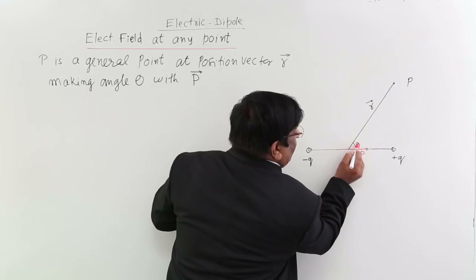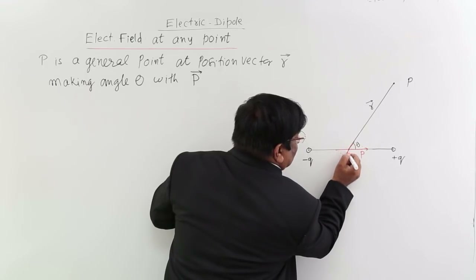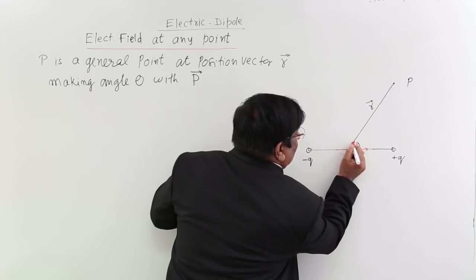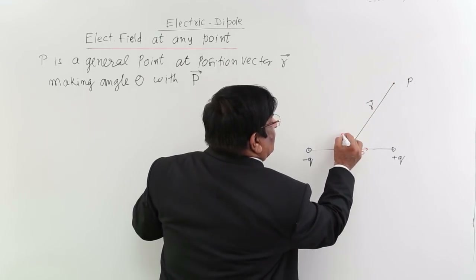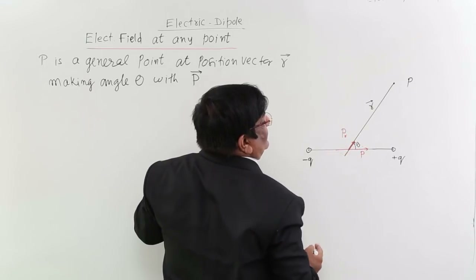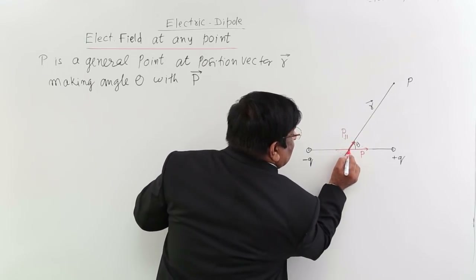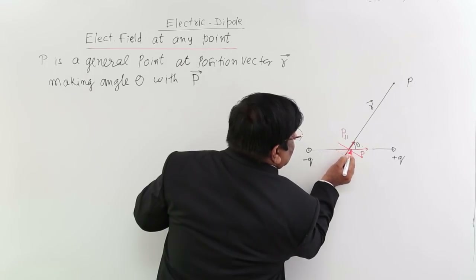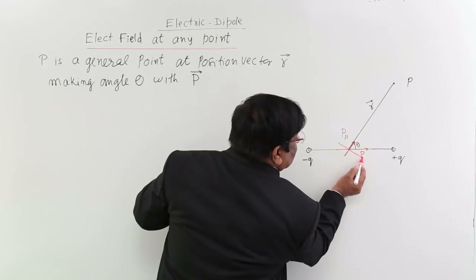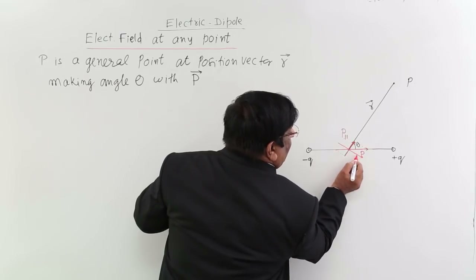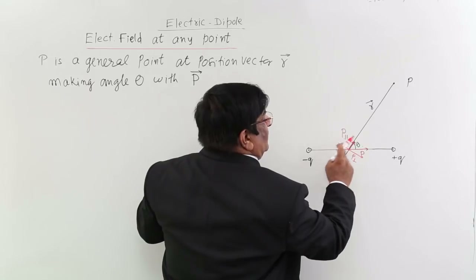Draw a perpendicular to get one component along the direction of r — this is the component of p parallel to r. The other component is perpendicular to r. So p is resolved into two components: p parallel (along r) and p perpendicular (normal to r).